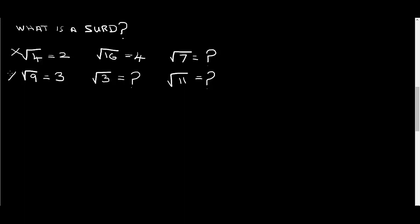Which one's a surd? Well, the first one isn't a surd, the second one isn't a surd, and the third one isn't a surd, because they are whole numbers. But, root 3, root 7, root 11 are surds. They're irrational numbers.